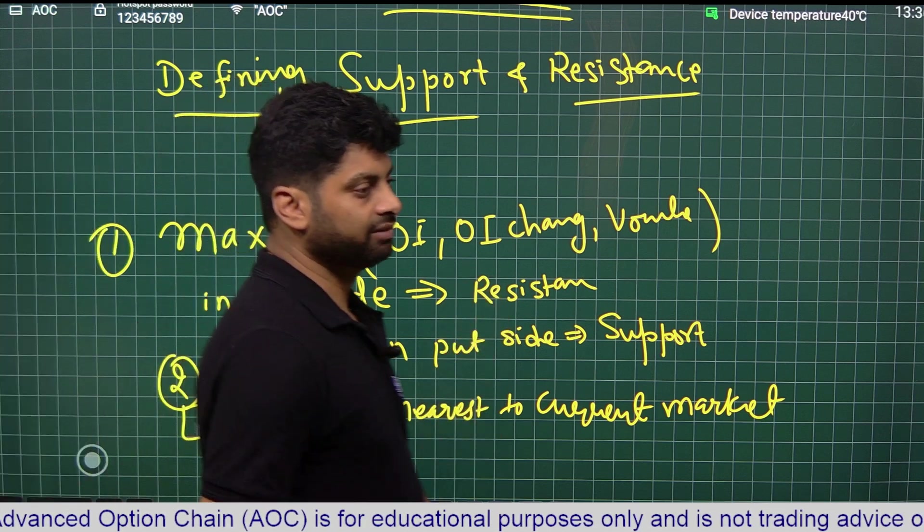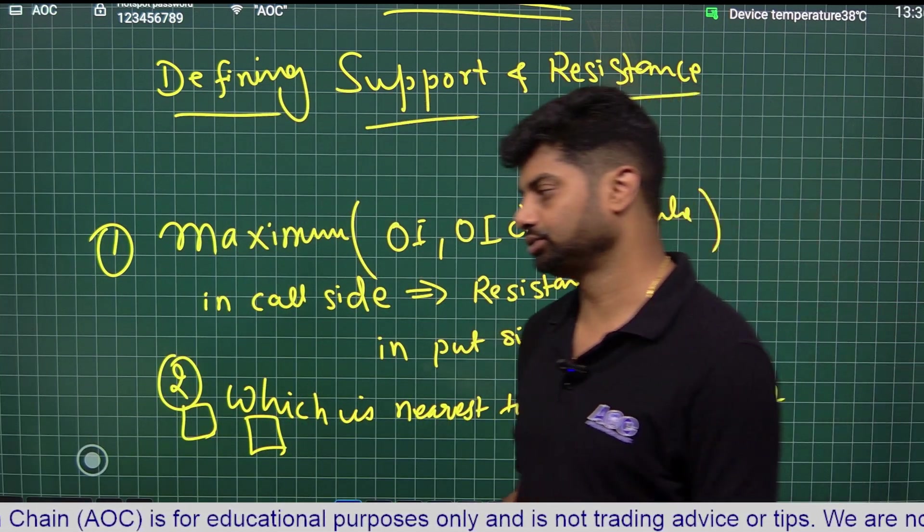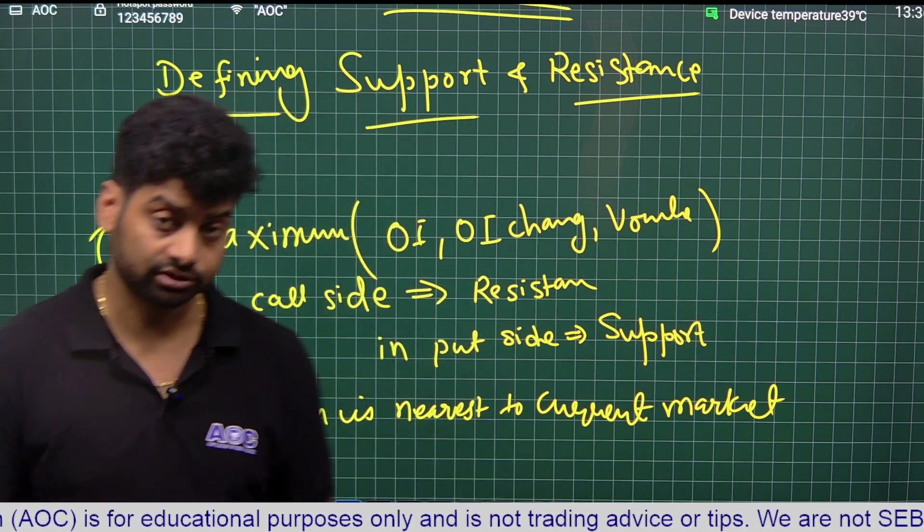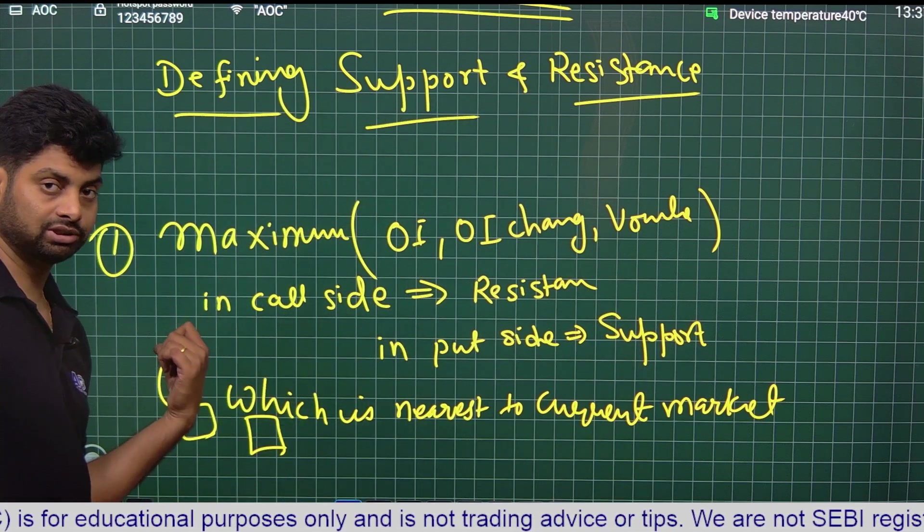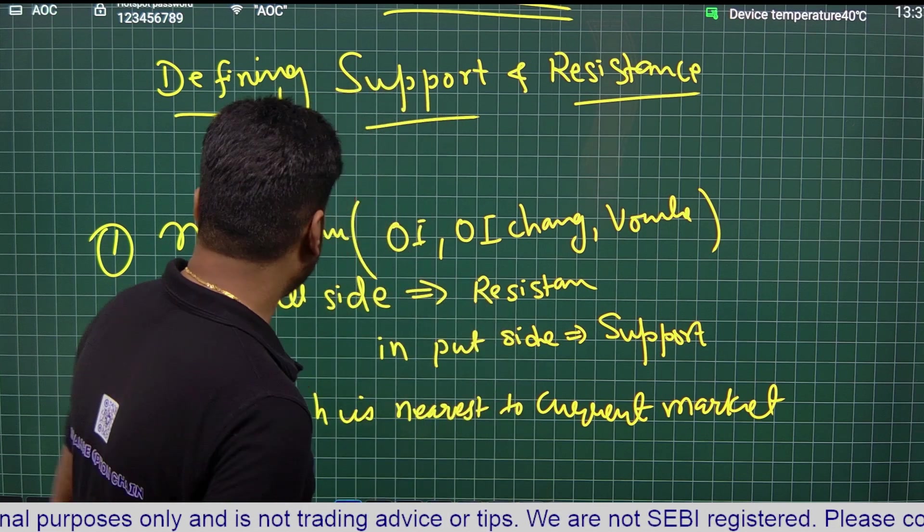Then whichever strike price is nearest to the current market, that is nearest to the spot, will be our support if that is for the put side and it will be resistance if that is for the call side.